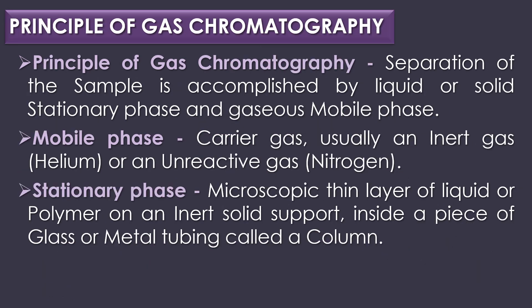Gas chromatography uses an inert or unreactive carrier gas as the mobile phase, and the stationary phase is a thin layer of liquid. As the mobile phase moves, it separates the mixture into its individual components in the stationary phase. The mobile phase carrier gas is usually an inert gas such as helium or an unreactive gas such as nitrogen. The stationary phase is a microscopic thin layer of liquid or polymer on an inert solid support inside a piece of glass or metal tubing called a column.